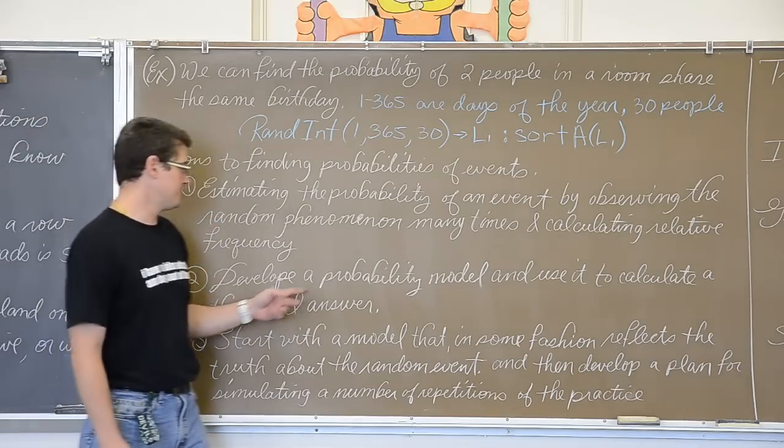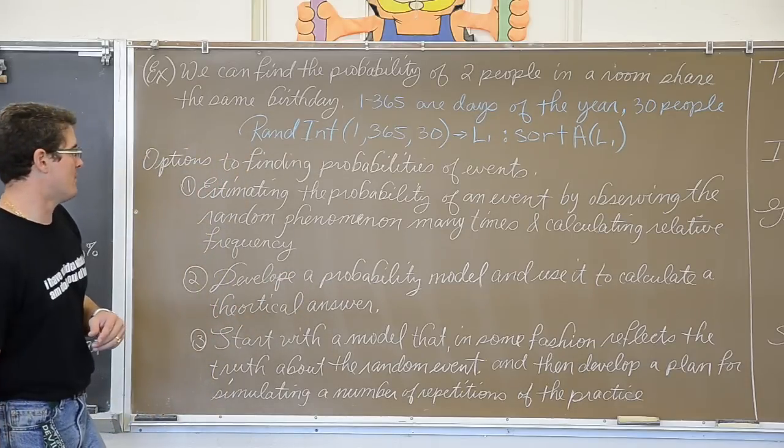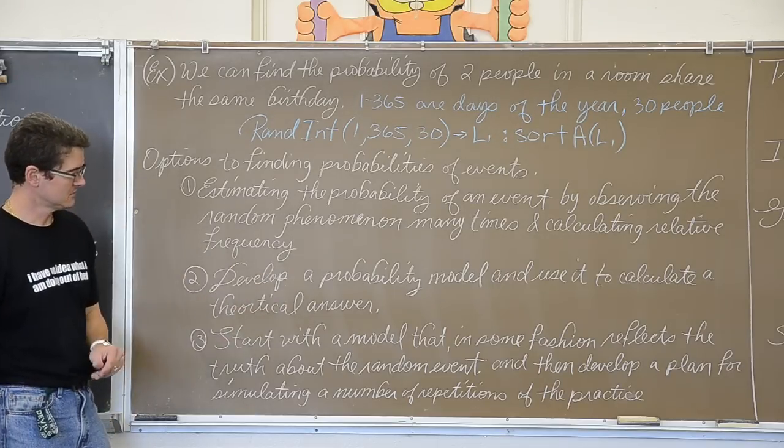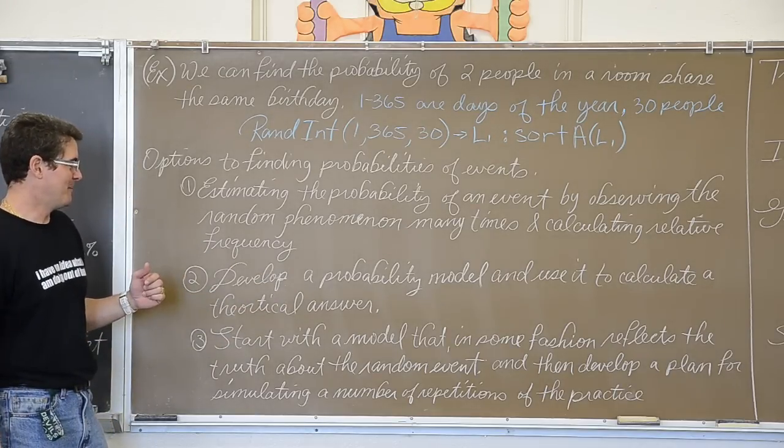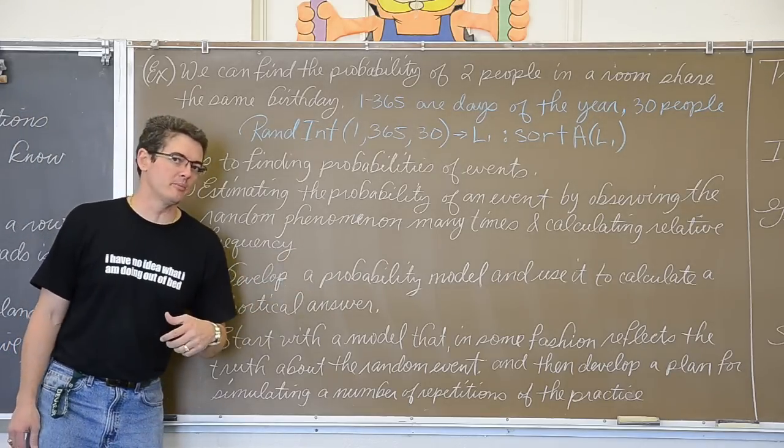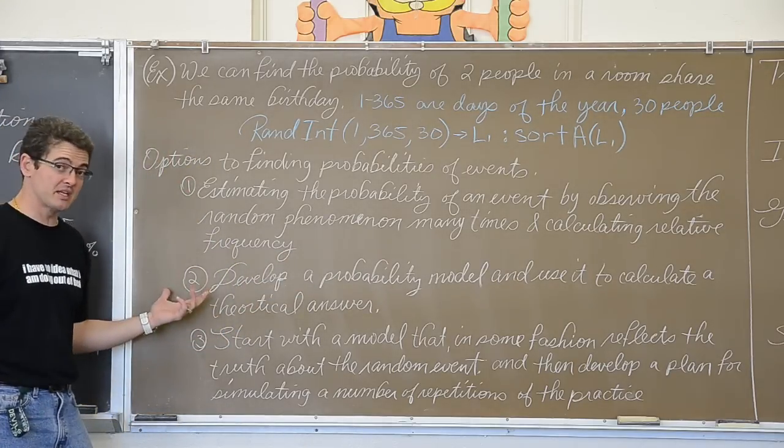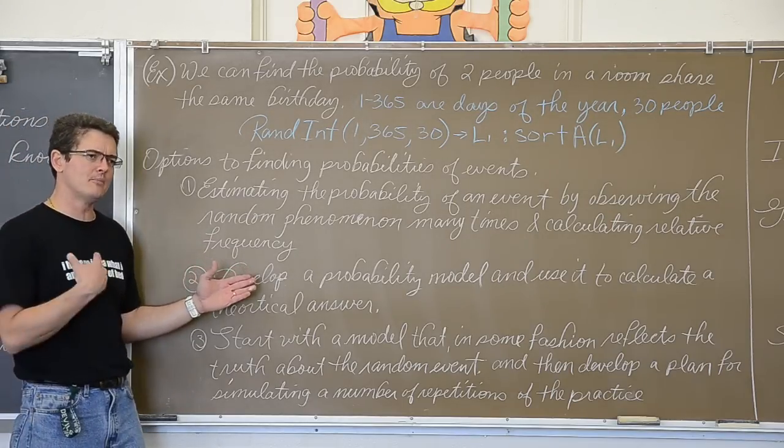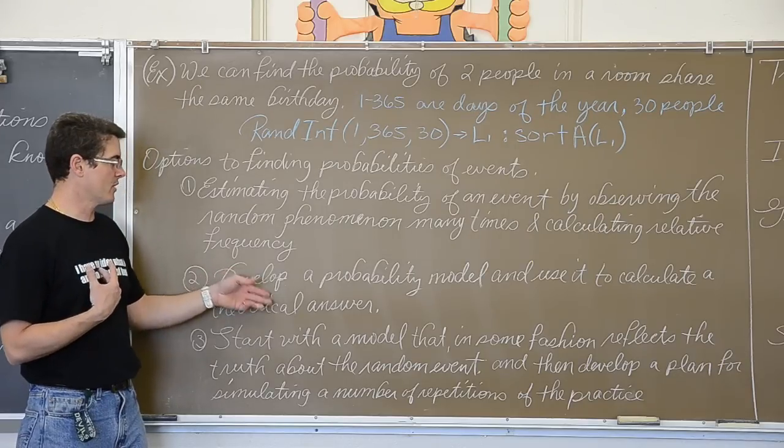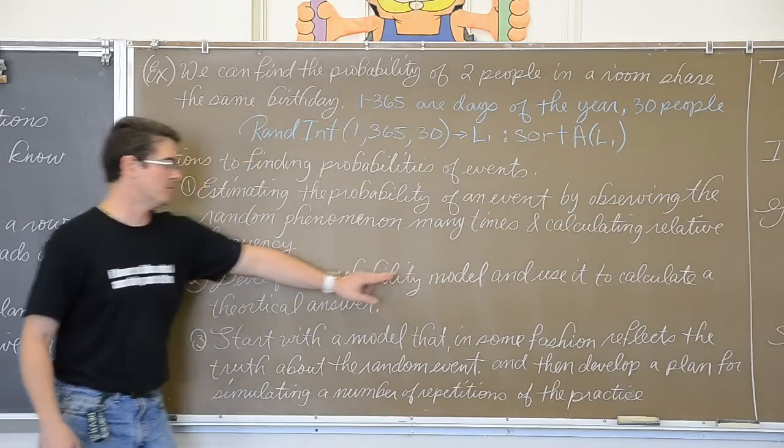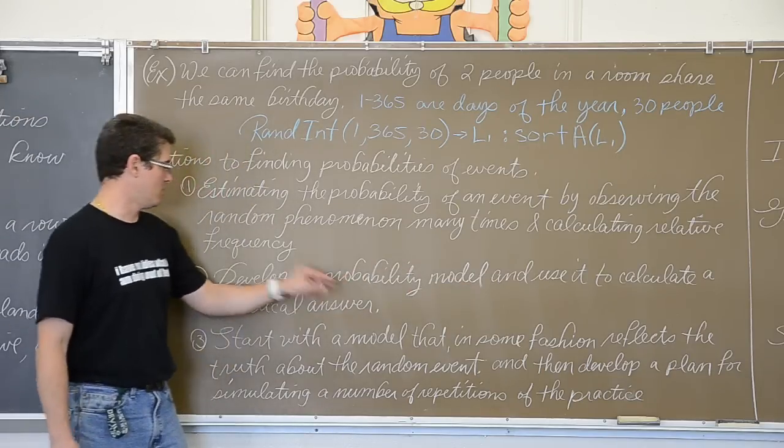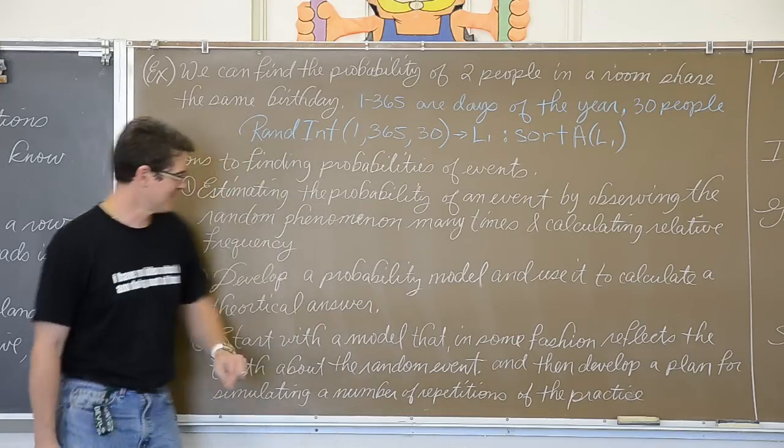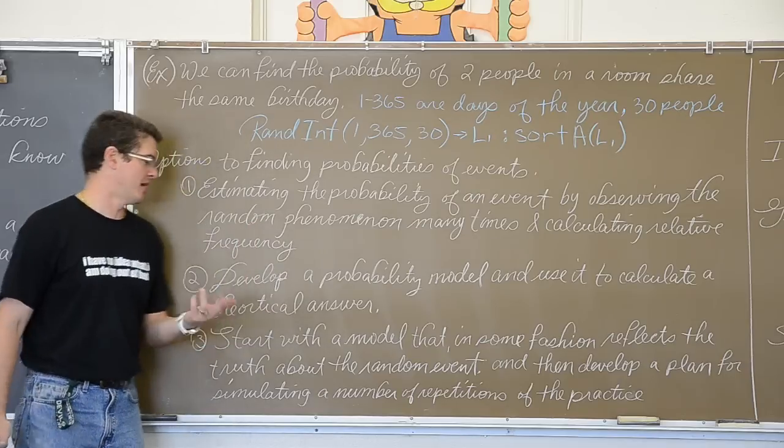But now I am getting into variability and sample size and I am kind of getting off topic because most of this section I want to talk about is simulation. Moving on. Develop a probability model and use it to calculate a theoretical answer. This is more like your discrete random variable, which we have not studied yet. We will be talking about this very shortly in chapter 7. Discrete random variables and setting up a probability model. And actually I will be setting up a probability model with you when we talk about the very next section of notes, which will be aired tomorrow. And of course if you are on the internet there is no air date, it is whenever you play it.